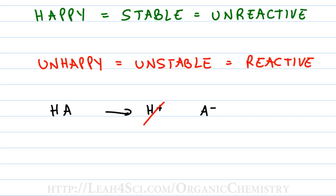Now think of this in the opposite way. If you have an acid that breaks apart to give A minus, and that A minus is so unhappy having given up that proton, it is unstable and therefore very reactive — reactive enough to lash out and attack that H+, reforming HA. If the acid doesn't stay dissociated and instead reforms HA, you're not putting H+ into solution, meaning your H+ concentration is very low — making it a weak acid.